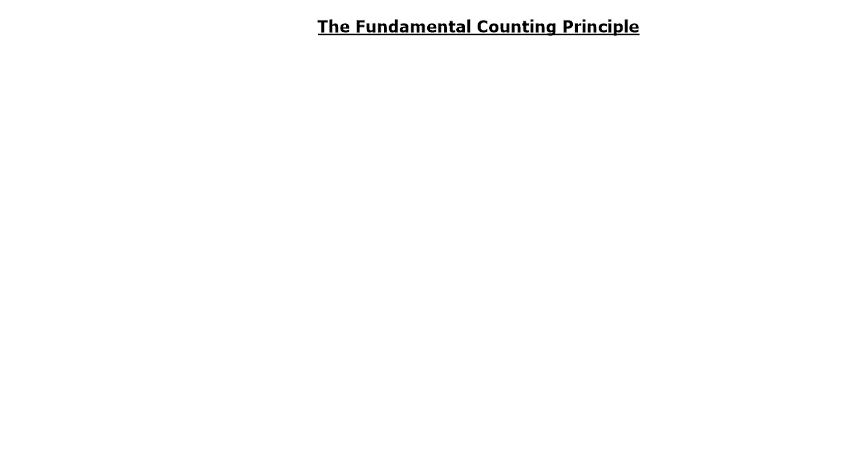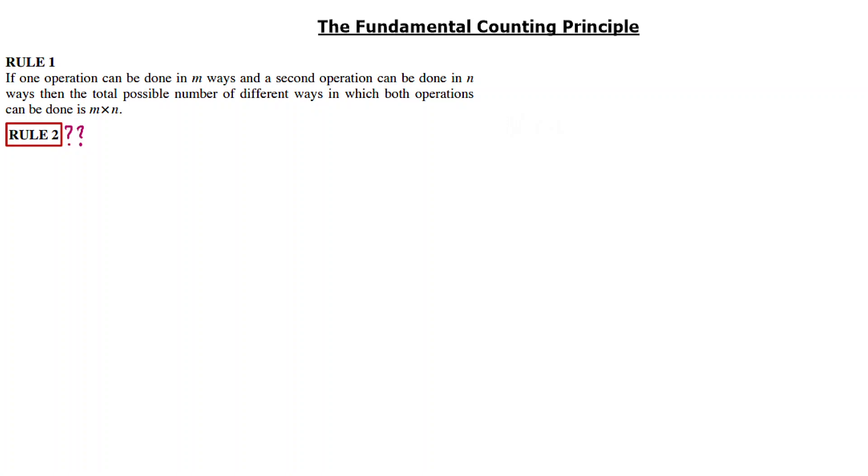But the fundamental counting principle, Rule Number 1, states: If one operation can be done in M ways and the second operation can be done in N ways, then the total possible number of different ways in which both operations can be done is M times N. We have a second, third, and fourth rule as well, but in this video we will cover only the first rule. Please check the description box for links to those lessons.